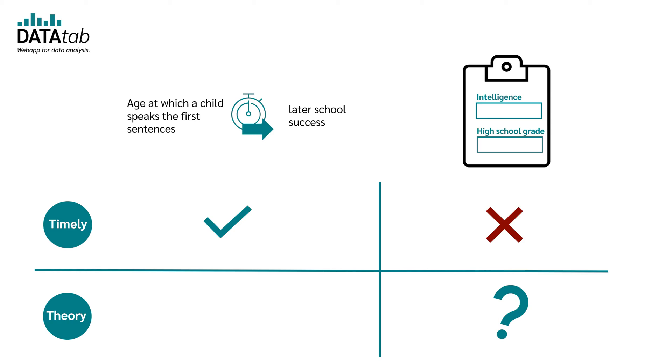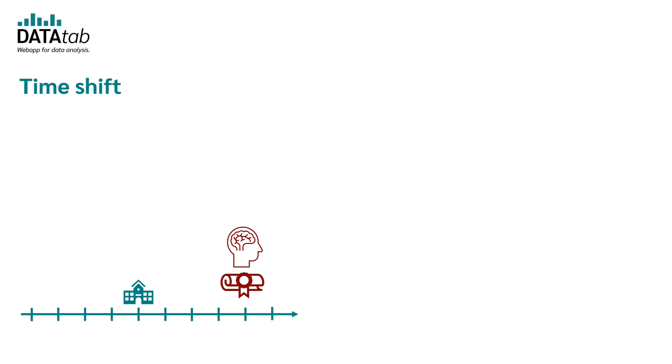There is certainly a high correlation between intelligence and high school grade. But it could also be that people who study a lot have good grades and have acquired the knowledge to do well in an intelligence test. So the intelligence and the high school grade were determined at the same time. Of course, you can avoid this by taking the intelligence test before school starts. Then you can be sure that the school had no influence on the intelligence test.